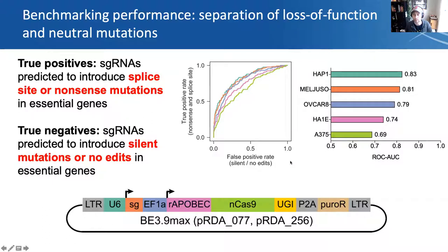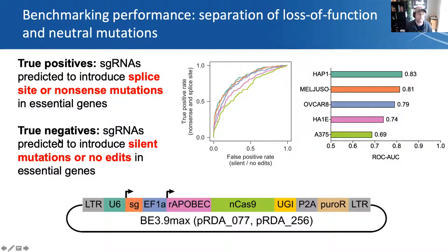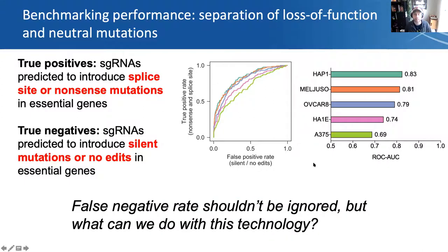The first question we wanted to ask is how well do these base editors work in mammalian cells in this screening setting. We developed a lentivirus that expresses both the guide RNA and the BE3.9max architecture. For benchmarking, we made a library with guide RNAs targeting essential and non-essential genes. We defined true positives as guide RNAs predicted to introduce splice site or nonsense mutations in essential genes, and true negatives as guides that introduce silent mutations or no edits in those same essential genes. The results are plotted here, where one can calculate the area under the curve.